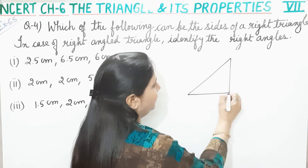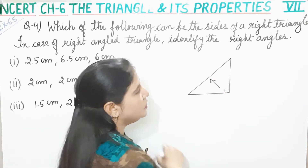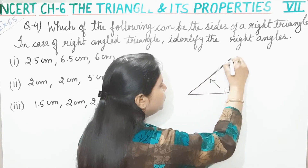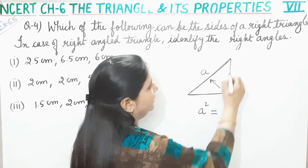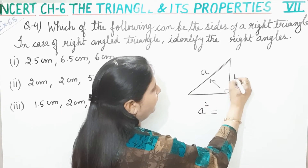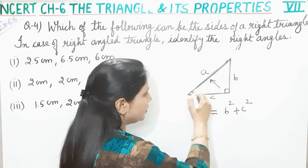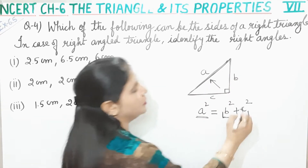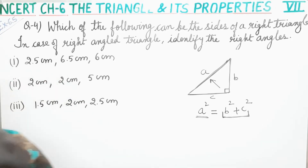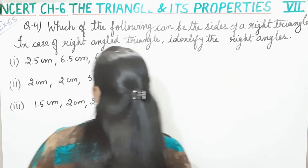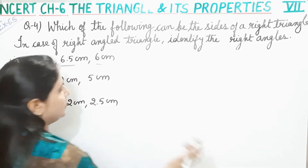Let's suppose agar ye right triangle hai, toh jo sabse longest side hai woh kaun si hogi? Jo 90 degree ke bilkul saamne wali side hogi — woh longest side hai, jise hum hypotenuse bolte hain. Toh jo longest side hai na, iska jo square hoga — let's suppose ye 'a' hai — toh a ka square barabar hoga in jo other two sides hain, let's suppose 'b' aur 'c', to b ka square plus c ka square. Chalo start karte hain — first one.